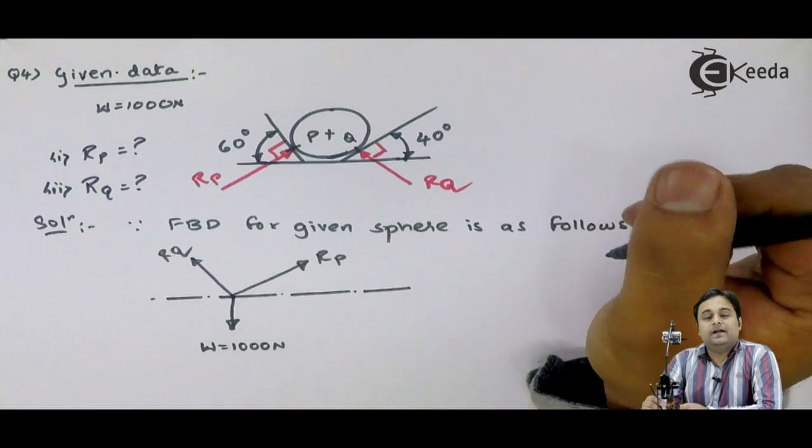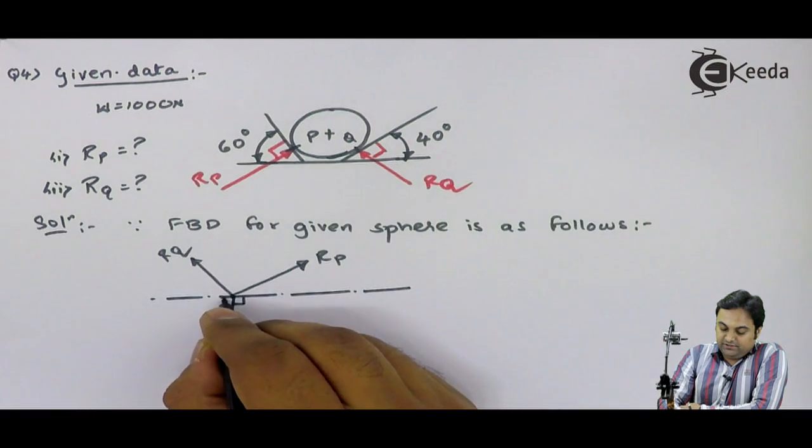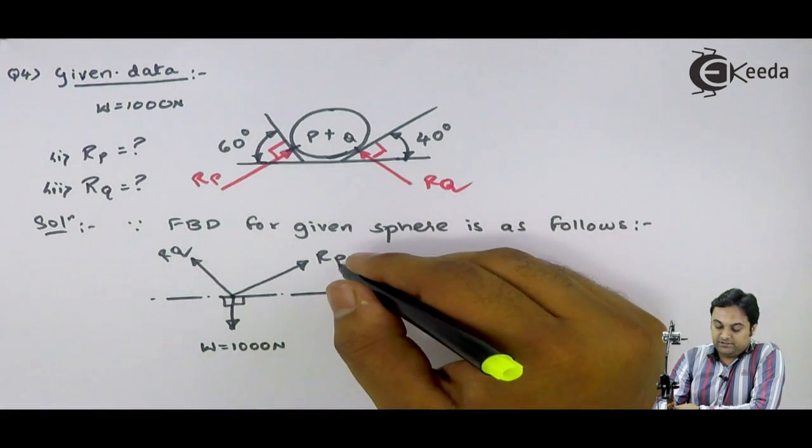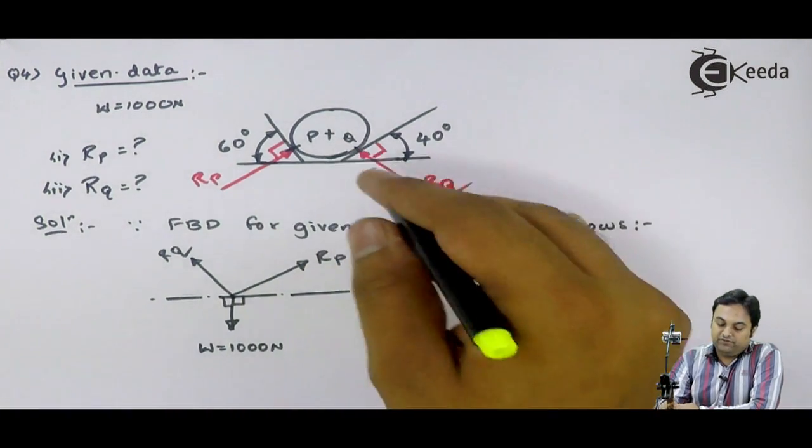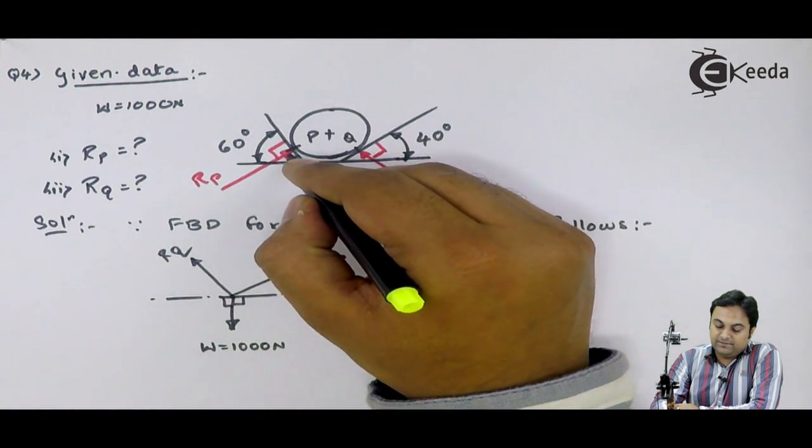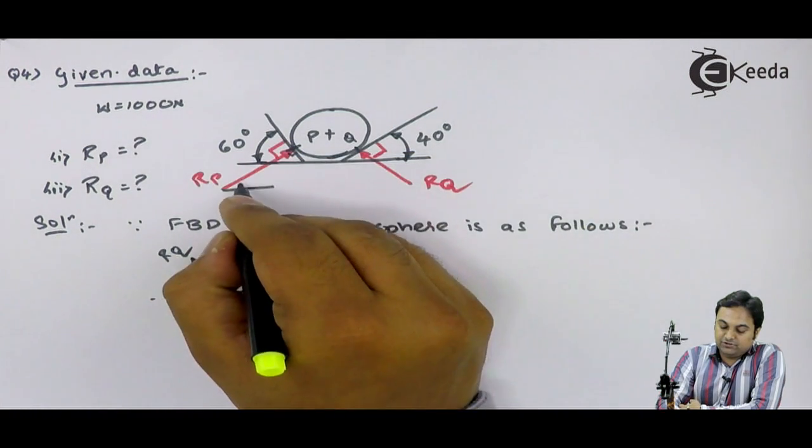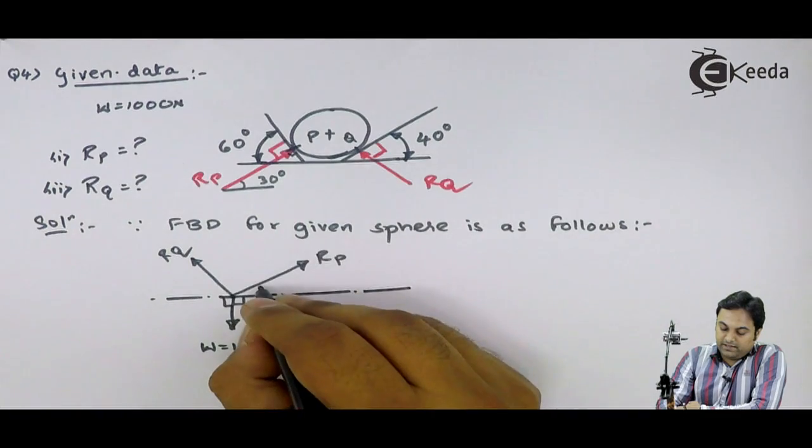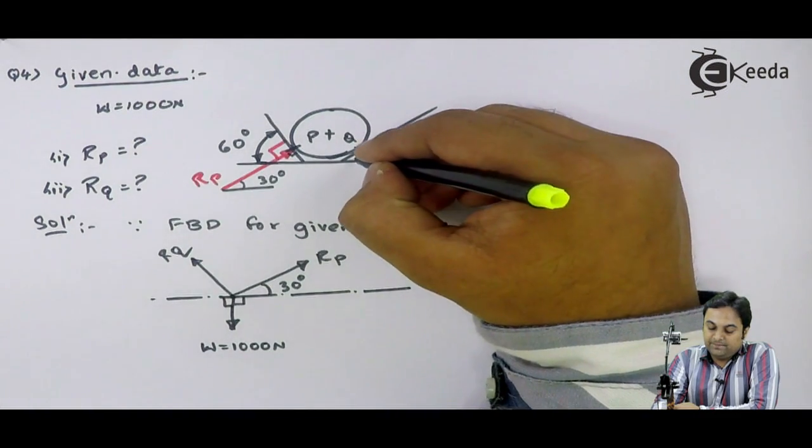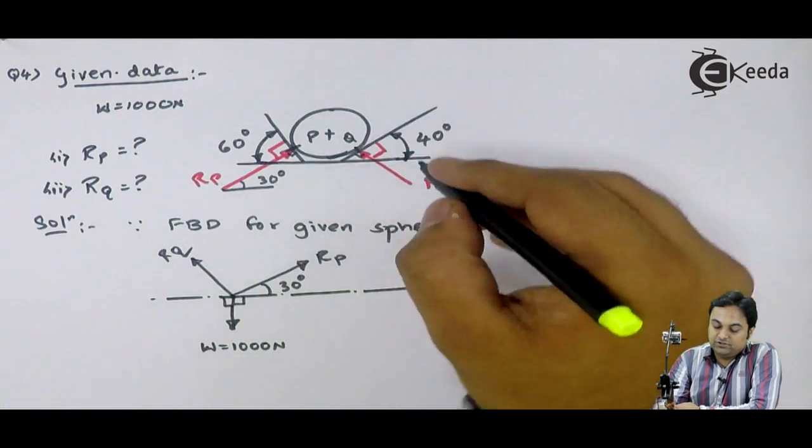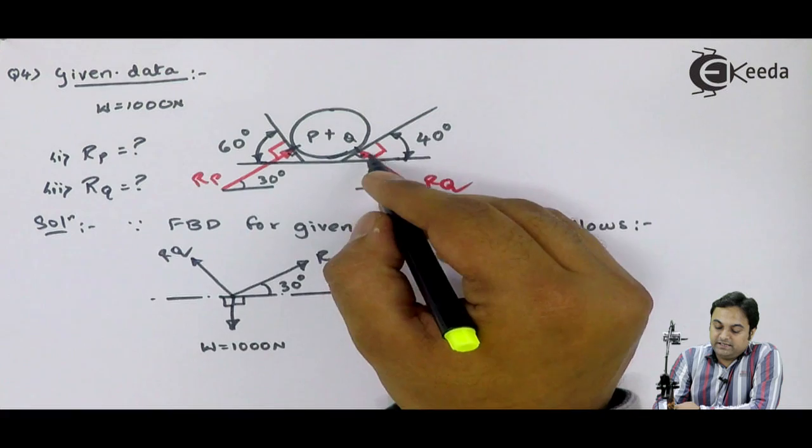I'll extend reaction at Q. Now I need to know the angle between each of them to apply Lami's theorem. Weight is inclined at 90 degrees to the horizontal. RP is perpendicular to the surface, this angle is 90, here this is 60, so the remaining angle with horizontal is 30 degrees. Here angle is 90 degrees and the inclined plane is 40, so reaction at Q is inclined at horizontal at 90 minus 40, that is 50 degrees.